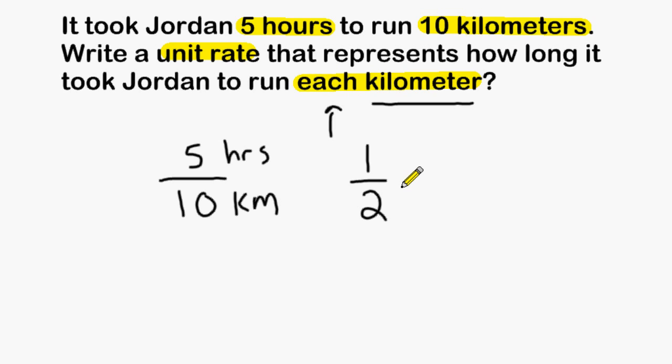The reduced fraction will answer the question how long it took Jordan to run each kilometer. We would say that it took him one half of an hour to run one kilometer. So we already established what our unit rate is.